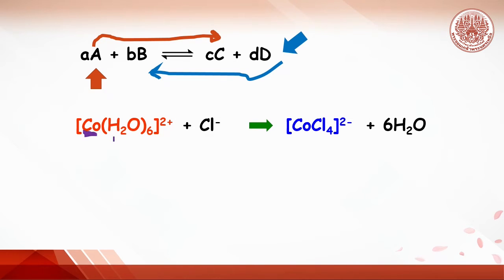Cobalt hexa-aqua, or cobalt ion solvated with six water molecules, reacts with chloride ions from hydrochloric acid. The ligand chloride will replace the water molecule to get four chloride ions solvated with cobalt. How do we know about this equilibrium?